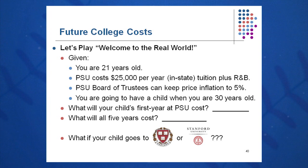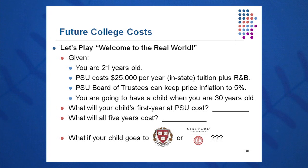And what will happen if your child decides to go to an Ivy League school — a Harvard, a Cornell, a Penn, or another prestigious private university? You can calculate that using the present value and future value equation.